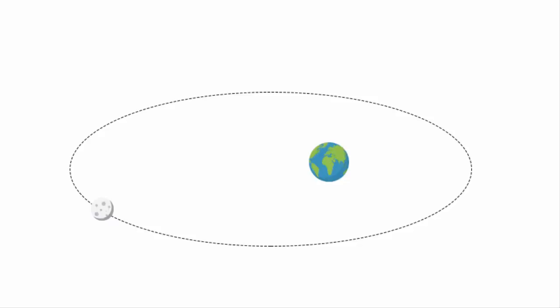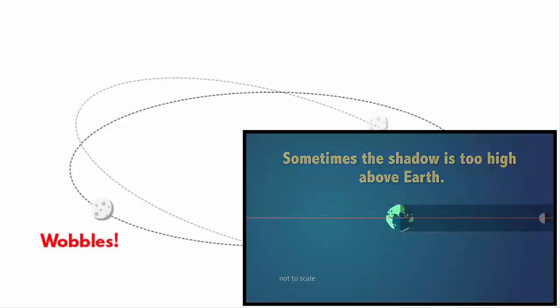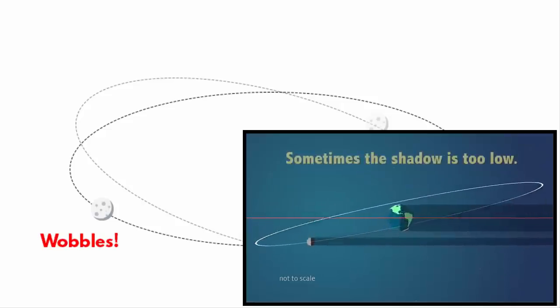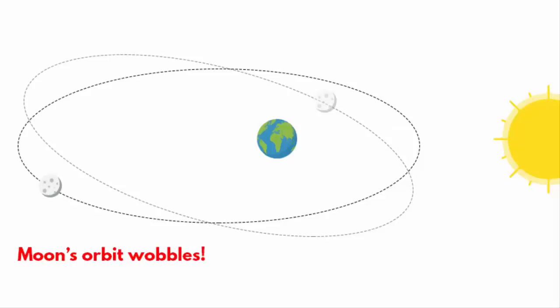As the moon goes around the earth, its velocity changes from time to time. As a result, the moon's orbit wobbles. That is why you will notice sometimes the moon's shadow is above the earth and sometimes it is below the earth. Because of this, we don't have a solar eclipse every month.